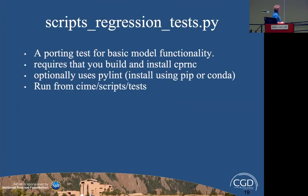There's a test script called scripts_regression_tests that requires you to build and install CPPRNC — there's a README in the source code for how to do that. It optionally uses a Pylint tool which you can install with pip or conda, then run from the scripts test directory, and it will make sure your port is solid.